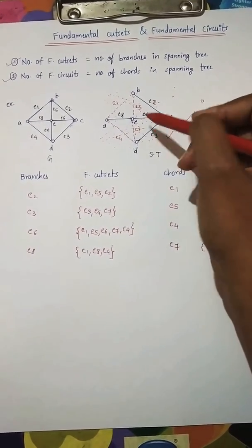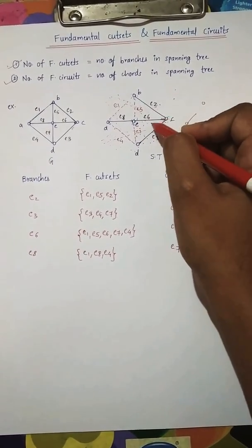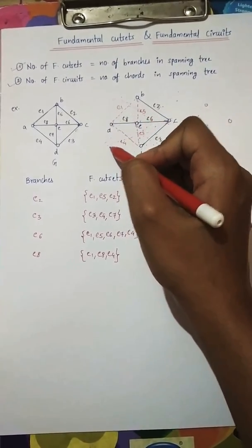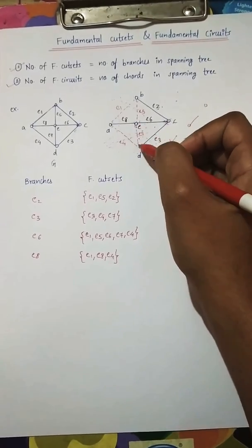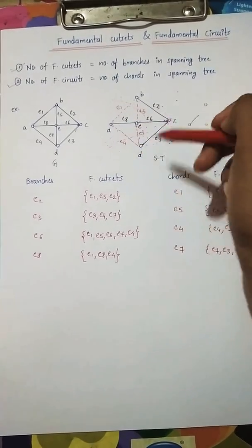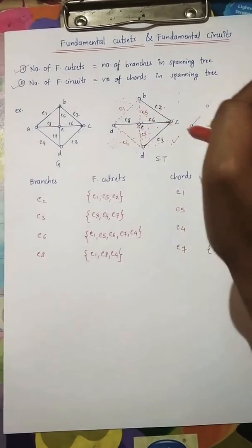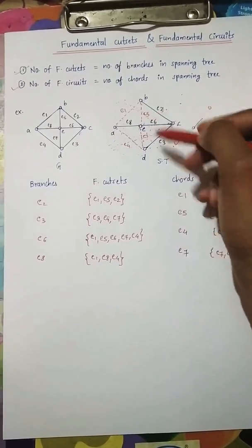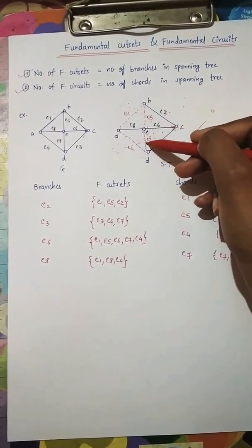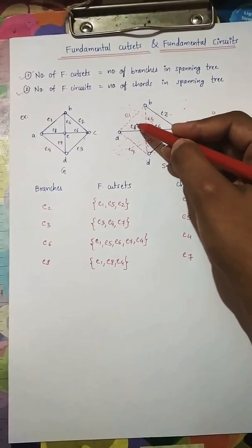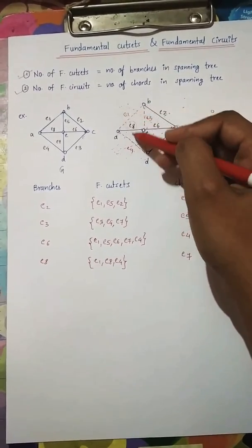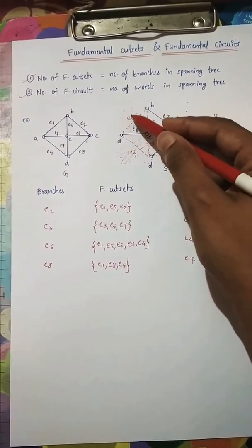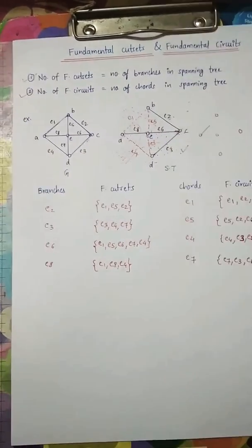For branch e6, e6 is our branch which is present in the spanning tree, and the chords are e1, e5, e7, and e4 — chords can be more than two but the branch must be exactly one. So the cut set for e6 is {e1, e5, e6, e7, e4}. For branch e8, the cut set is simply {e1, e8, e4}, with e8 as the branch and e1 and e4 as chords.